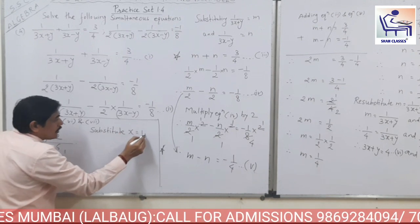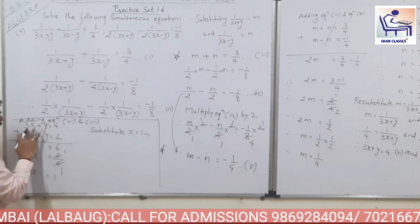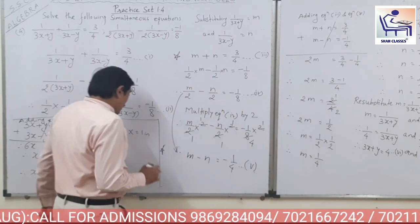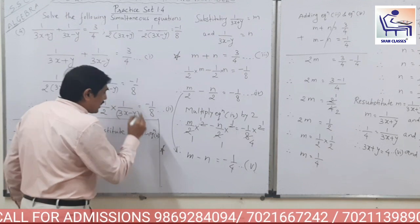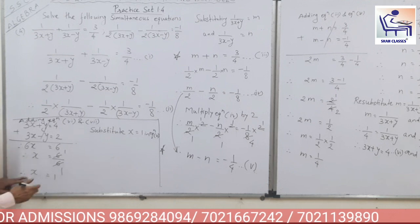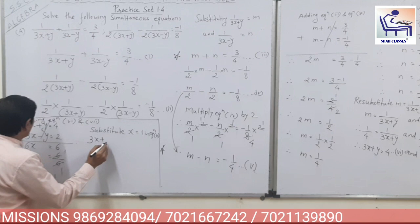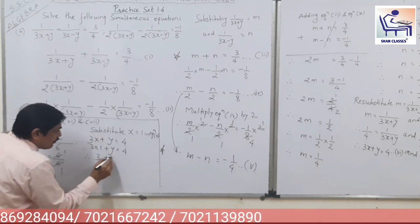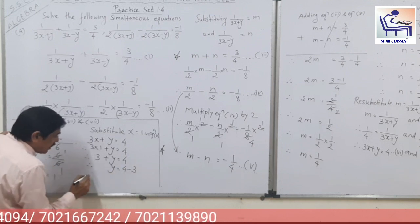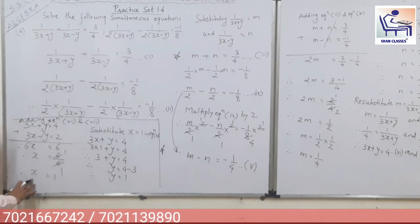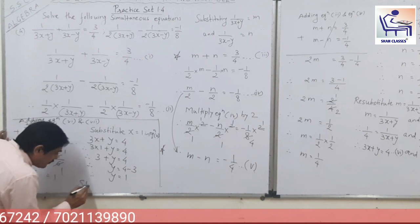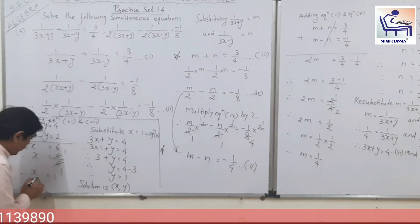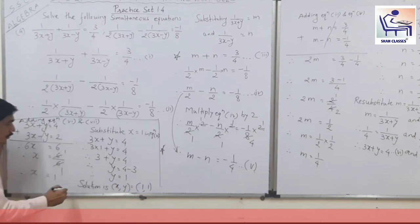Now substitute x is equal to 1 in equation 6: 3x plus y is equal to 4, so 3 into 1 plus y is equal to 4, so 3 plus y is equal to 4, y is equal to 4 minus 3, y is equal to 1. So solution is: x is equal to 1 and y is equal to 1. This is your final answer.